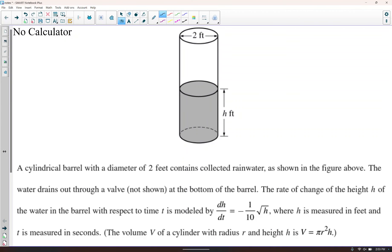A cylindrical barrel with a diameter of 2 feet contains collected rainwater, as shown in the figure above. The water drains out through a valve not shown at the bottom of the barrel. The rate of change of the height h of the water in the barrel with respect to time t is modeled by this function, where h is measured in feet and t is measured in seconds. The volume V of a cylinder with radius r and height h is V equals pi r squared h.